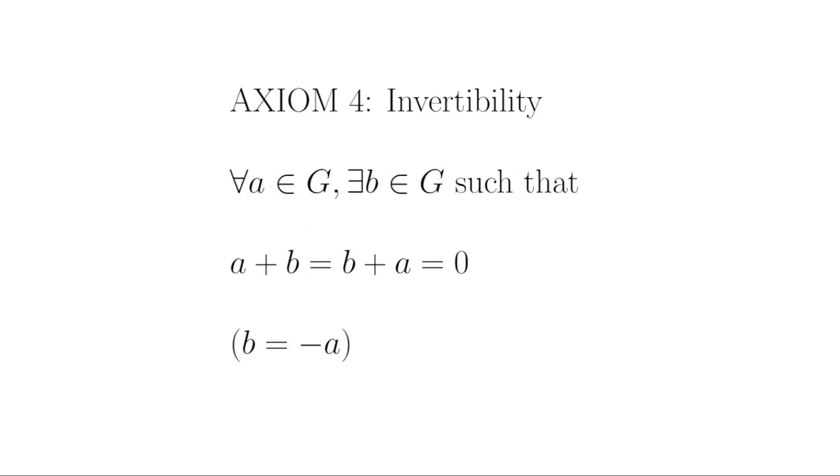Axiom four, invertibility. By invertibility, I mean that for any A in G, there exists a B in G, such that A + B equals B + A equals zero. And we usually write B as negative A when the group operation is addition, and we write B as A to the minus one when the group operation is multiplication.